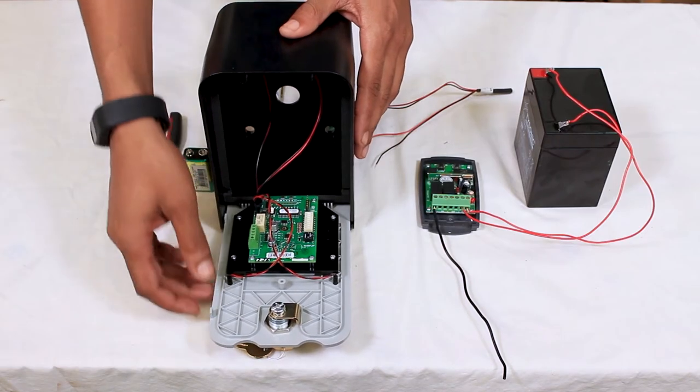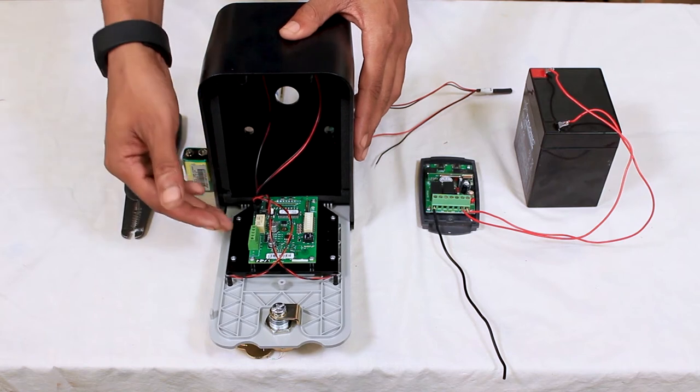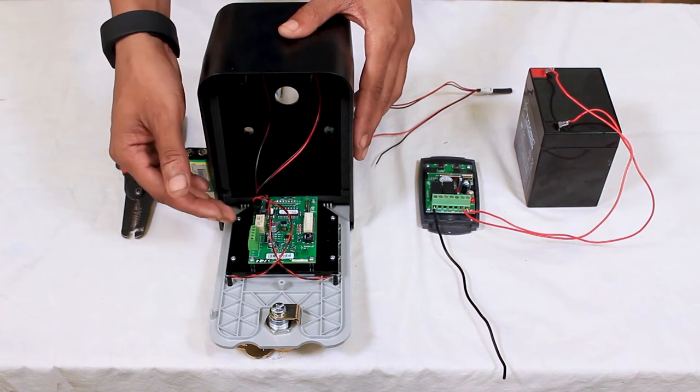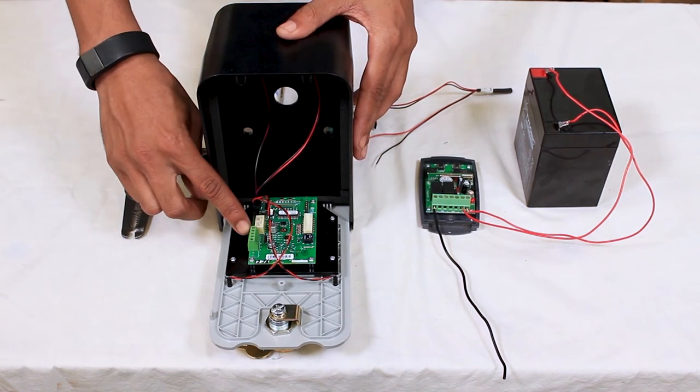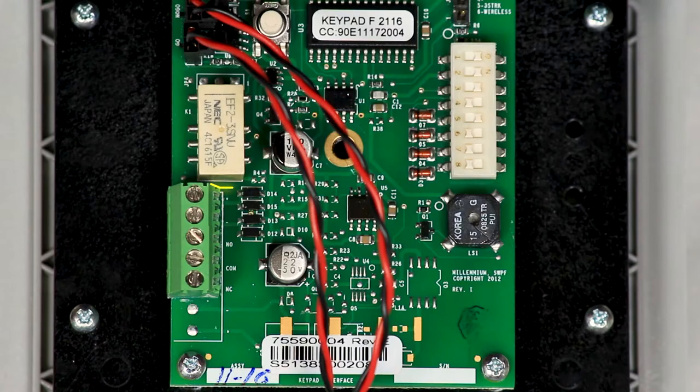I'm just going to explain these terminals really quick because it's going to be a very important part of the installation. The first two terminals are the incoming power. The very first one is positive and the second one is negative.